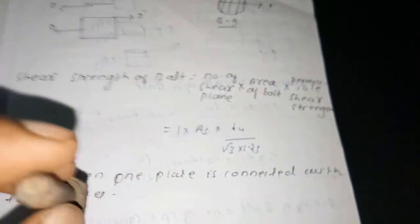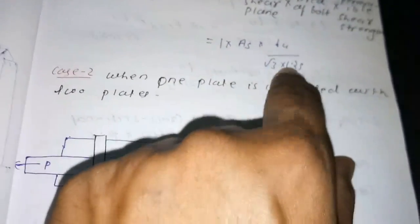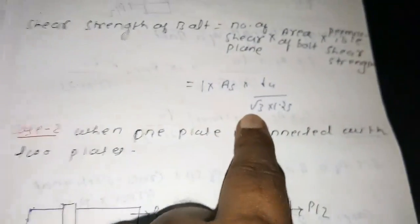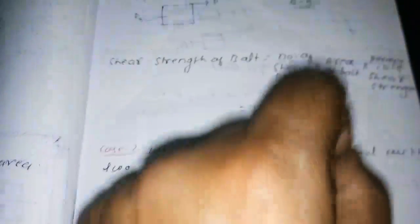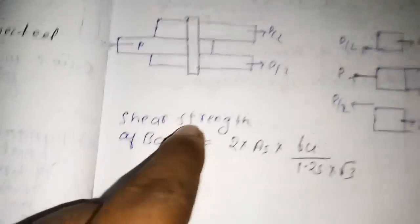The area used is A_net = 0.78 × π/4 × d² times the permissible strength, which uses the ultimate strength of the bolt (f_ub) for maximum utilization, divided by a factor of safety of 1.25, with an additional factor of √3. In a butt connection with two shear planes, you write it as 2 × A_net × permissible shear strength.